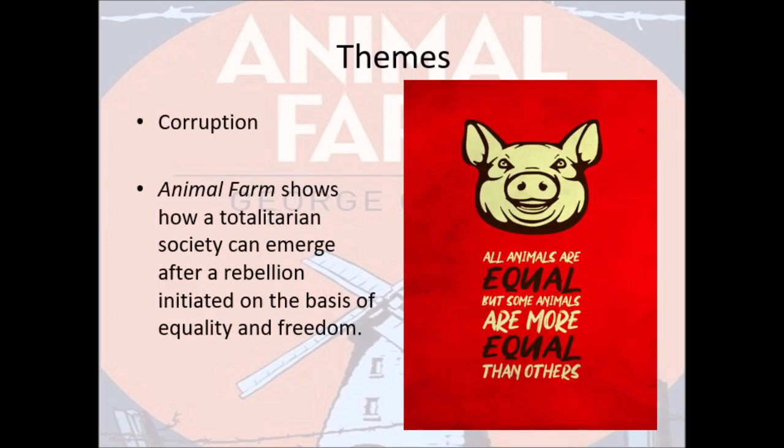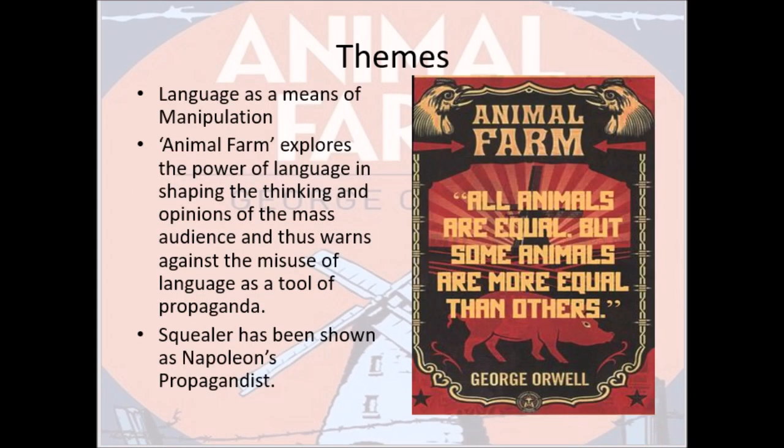Since Animal Farm shows how a totalitarian society can emerge after a rebellion initiated on the basis of equality and freedom, corruption looms large as a basic theme throughout the whole novel. Through this, Orwell tries to show how absolute power corrupts those who rule. Another highly significant theme is the use of language as a tool of manipulation.